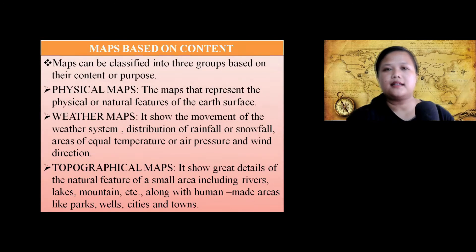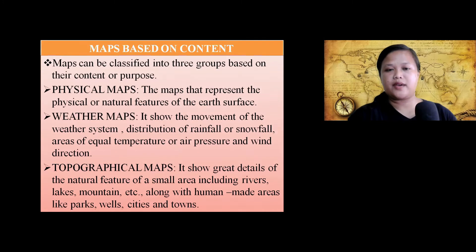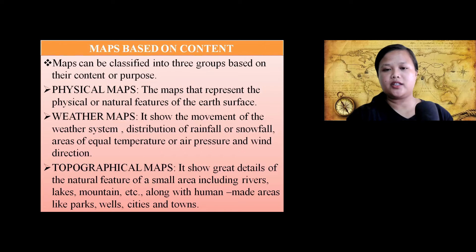Maps can also be classified into groups based on their content and purpose. First is physical maps — maps that represent the physical or natural features of the earth's surface. In these maps, geographical features are more important and boundaries are not important, so we won't be seeing the boundaries of any countries.